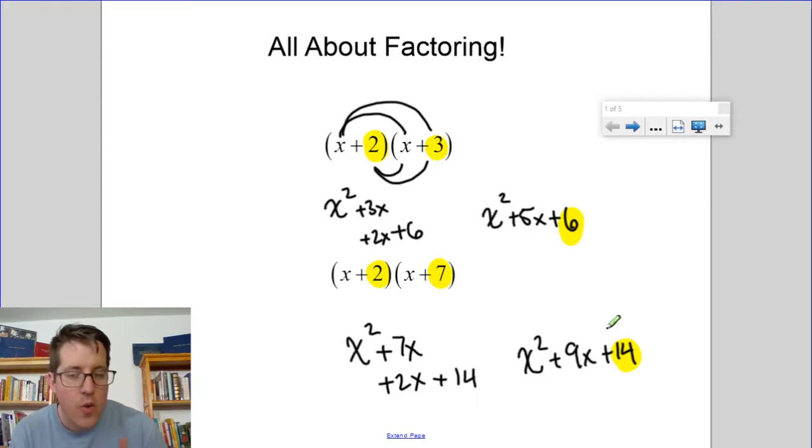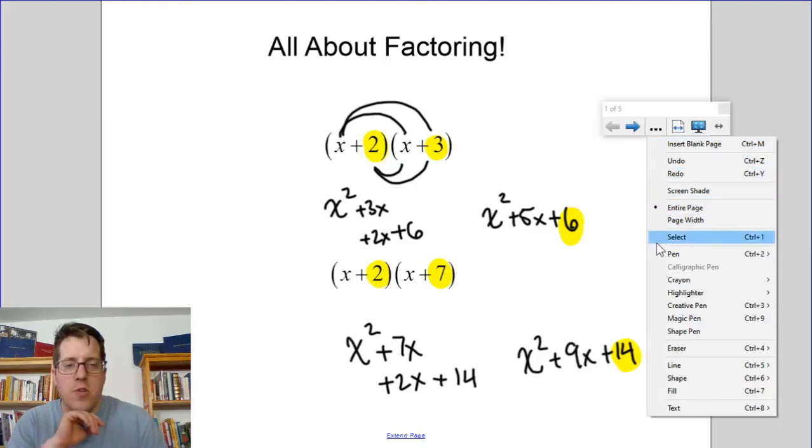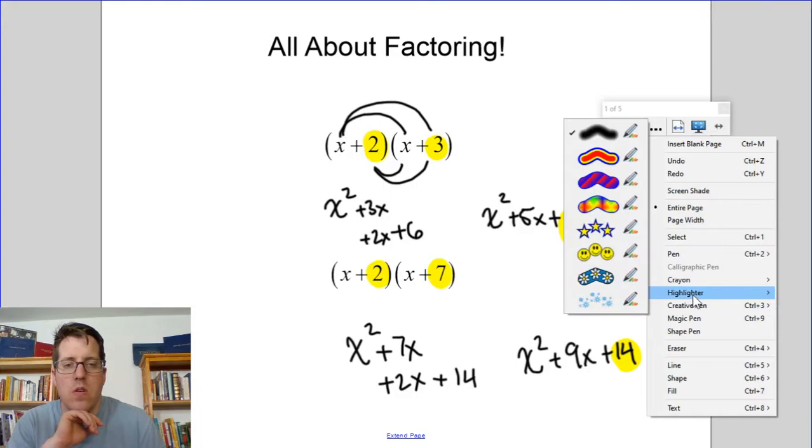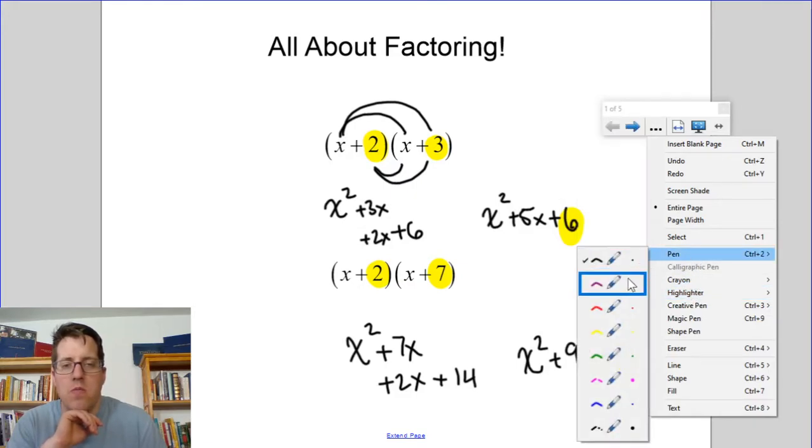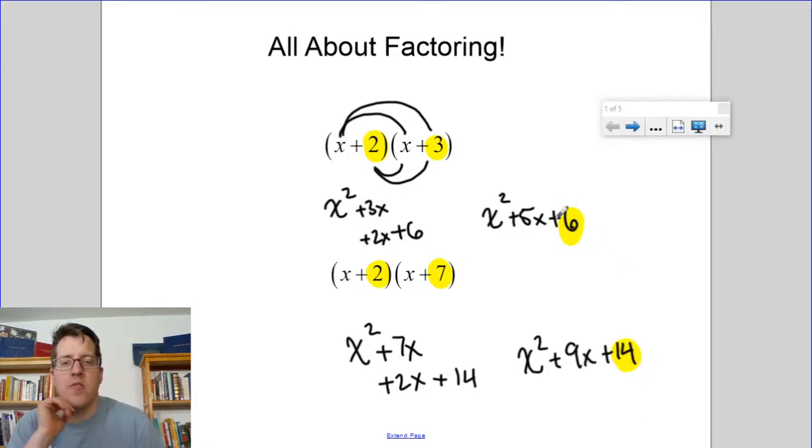Now it goes beyond just that. So when you're looking at the outers and the inners, notice we have 2x and we have 3x. Well what happens when we add those together? 2x plus 3x gives us 5x. The next problem we have 7x and 2x and that gives us 9x.